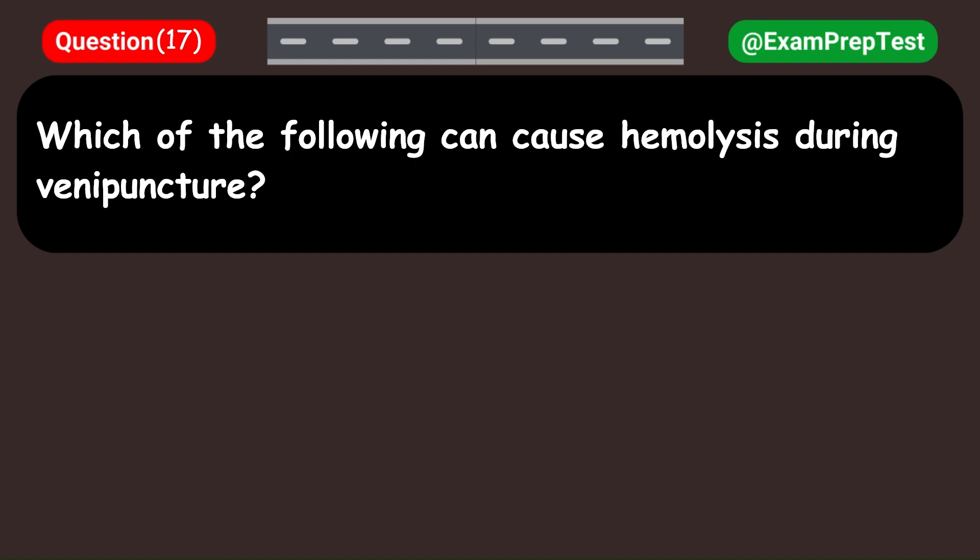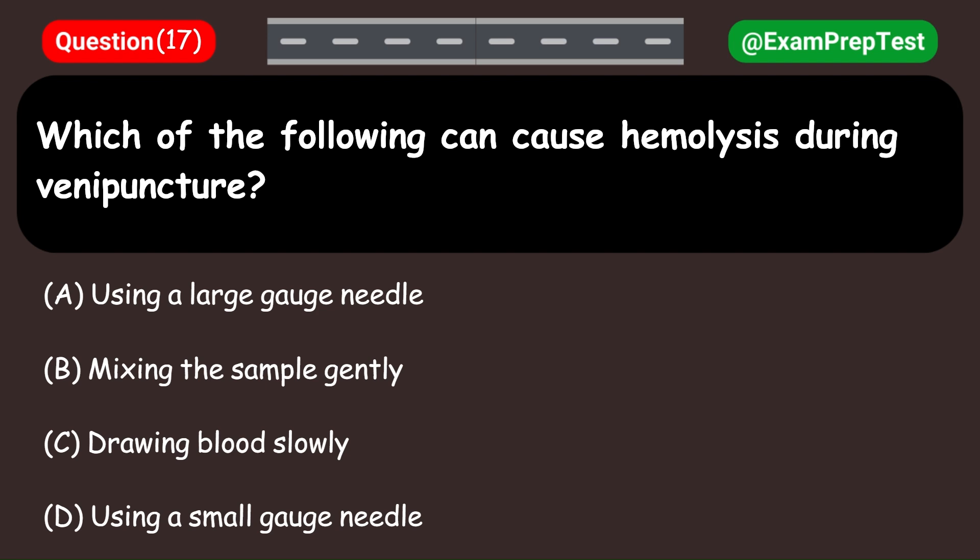Which of the following can cause hemolysis during venipuncture? A. Using a large gauge needle. B. Mixing the sample gently. C. Drawing blood slowly. D. Using a small gauge needle. Answer: D. Using a small gauge needle.